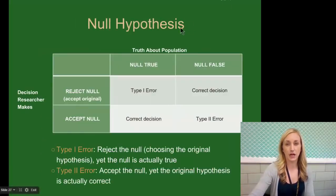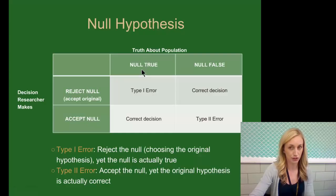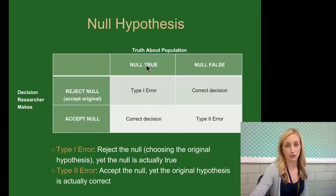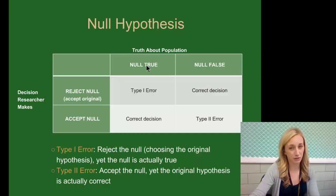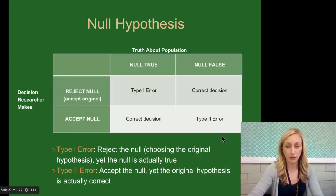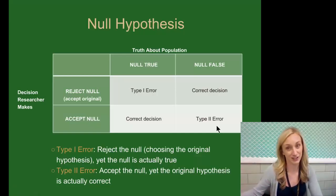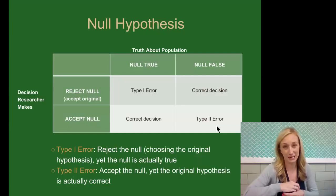Looking at this graph: you've got the truth about the population — the null being the opposite of your hypothesis is true, or if the null is false, meaning your hypothesis is true — and then the decision the researcher makes, which produces two types of errors. A type 1 error: if your actual hypothesis is not true but you reject the null choosing the original hypothesis when the null is actually true — you're wrong and publishing incorrect data. A type 2 error: you accept the null, yet the original hypothesis was actually correct. You're second-guessing yourself when you didn't need to.